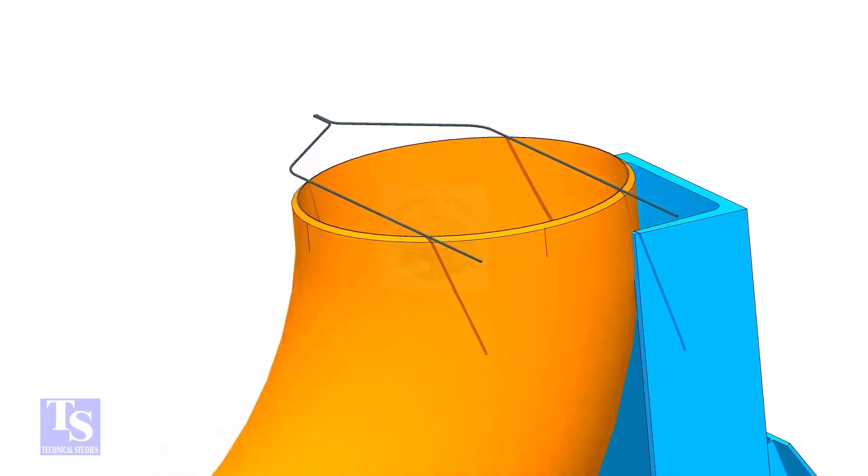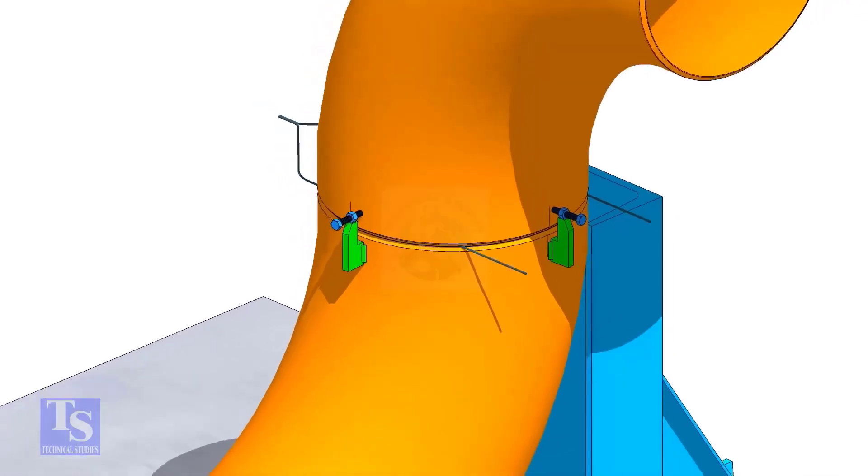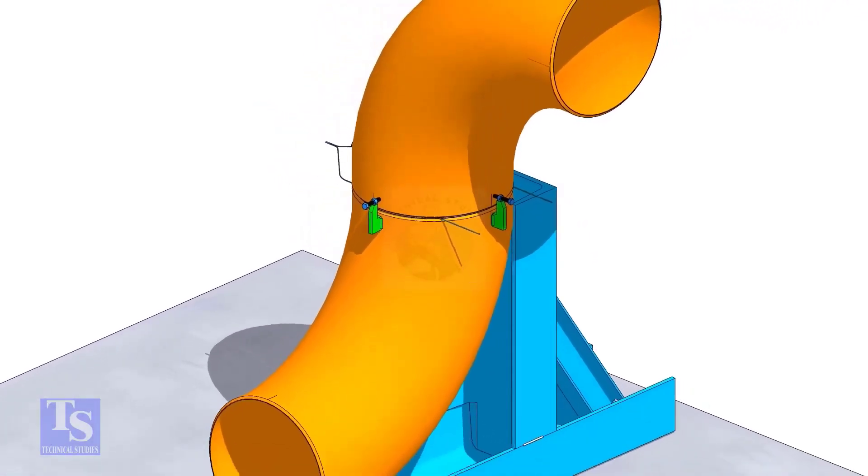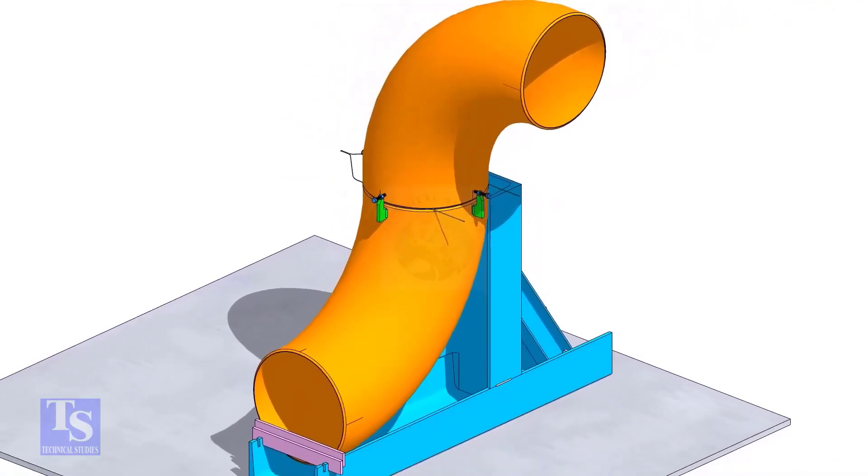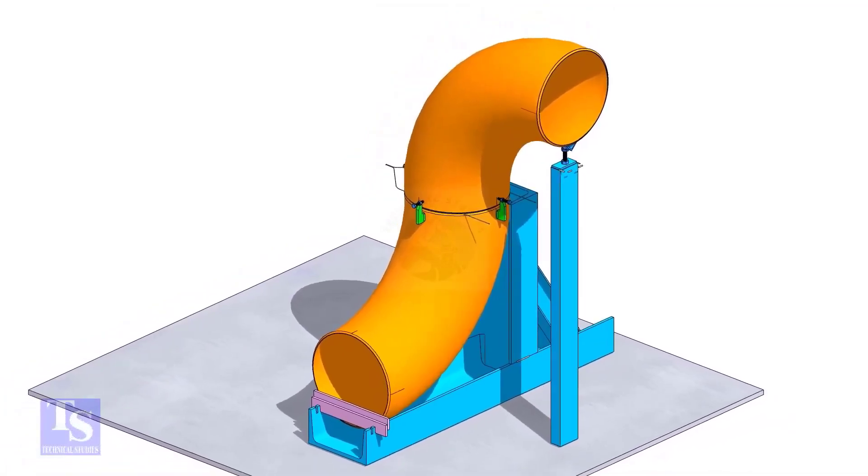Put the gap rod on the top face and tack weld four jack bolts as shown. Put the other elbow and match the center lines in which direction you want to rotate the elbow. Tack weld an adjustable support below this elbow and adjust the height.